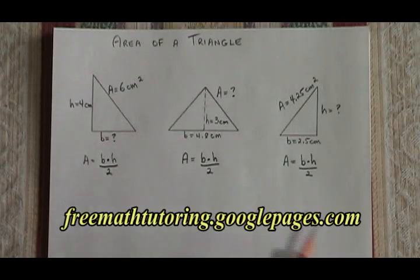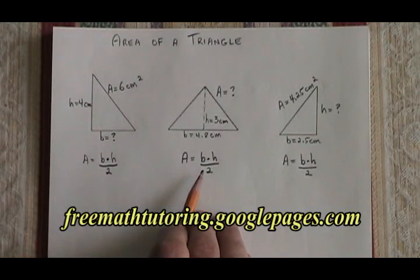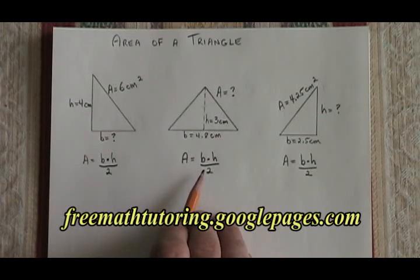The formula for the area of a triangle is A equals B times H over 2. B stands for the base and H is the height.